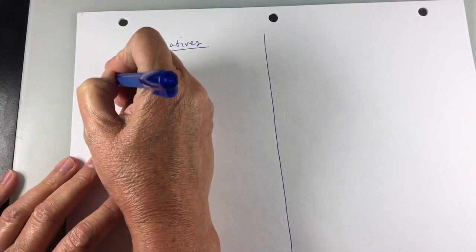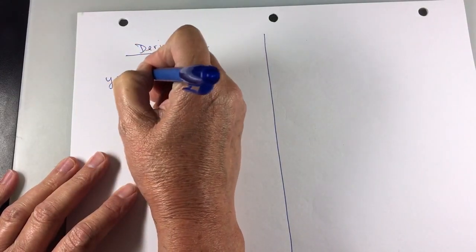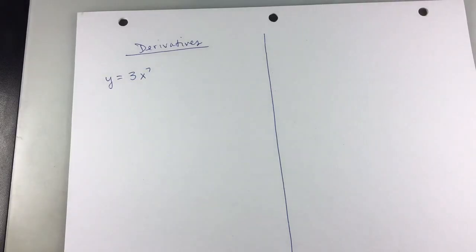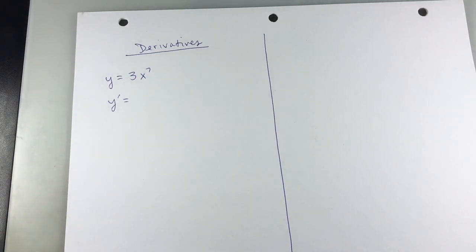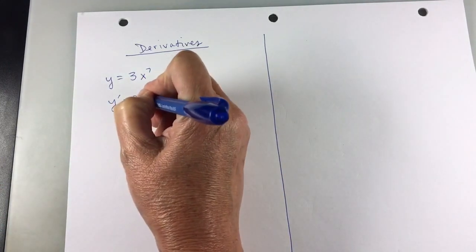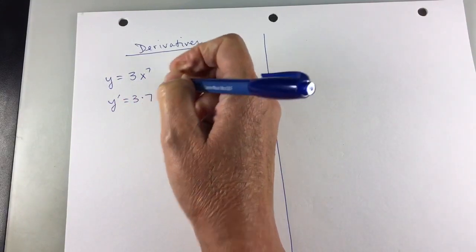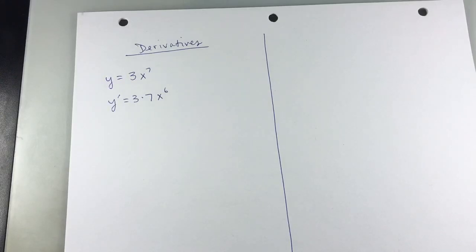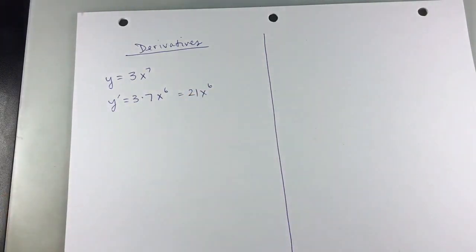So if I have y equals, I'm going to start with some easy stuff, 3x to the 7th, and you need to find y-prime, then you're going to do 3 times 7x to the 6th. So 7 comes down, you reduce the exponent, and you could write that 21x to the 6th.